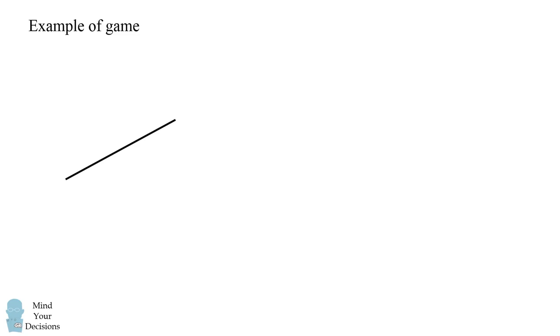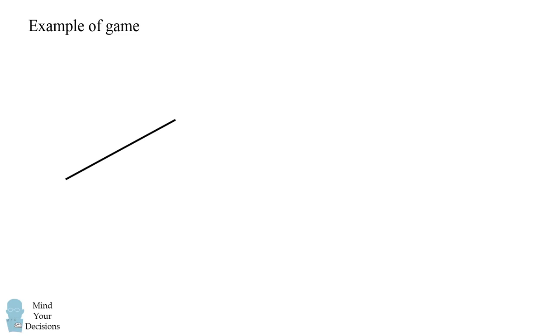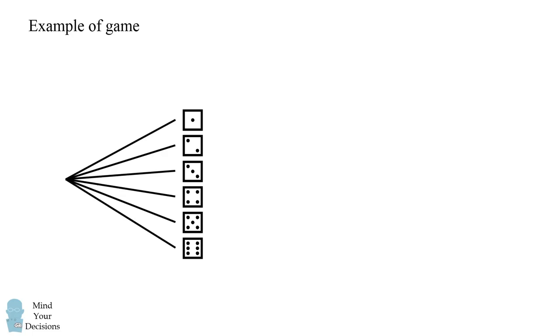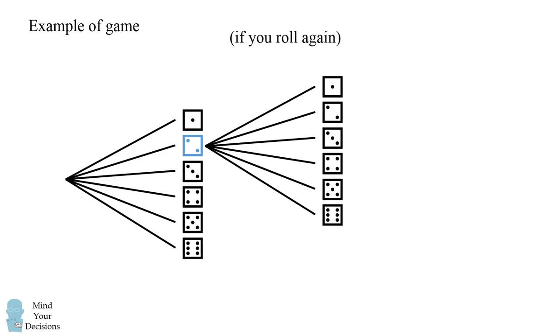So here's one way that the game could play out. On your very first roll, you could get any of the six numbers from one to six. Let's suppose you get the number two. You decide that's too low of a value, so you choose that you want to roll again.